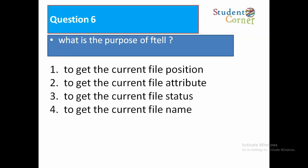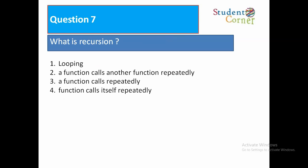Question number six: What is the purpose of ftell? Option one: to get the current file position, option two: to get the current file attribute, option three: to get the current file status, option four: to get the current file name. So to get the current file position will be indicated. Question number seven: What is recursion? Option one: looping, option two: a function calls another function repeatedly, option three: a function calls repeatedly, option four: function calls itself repeatedly. So option four is correct, function calls itself repeatedly.